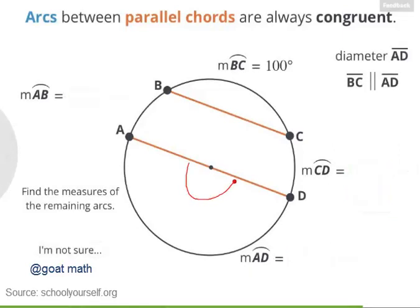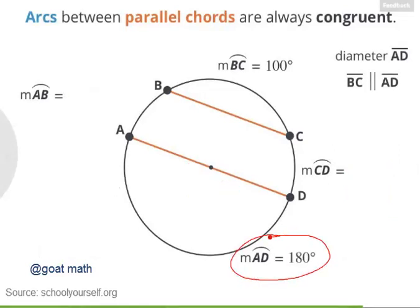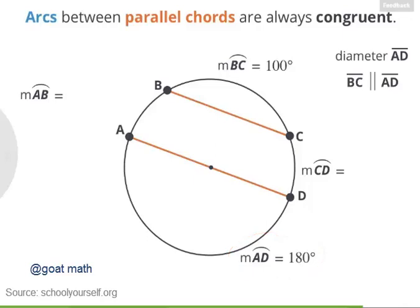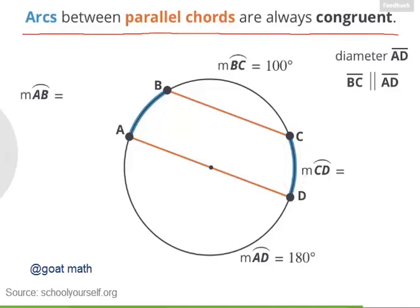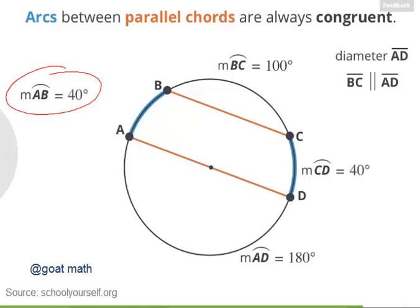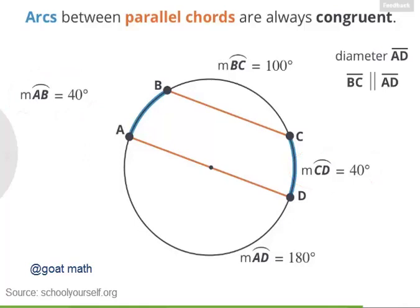Arc AD is half the circle, so it measures 180 degrees. So if arc BC measures 100 degrees, and arc AD measures 180 degrees, and all the arcs together add up to 360 degrees, that leaves 80 degrees for arcs AB and CD. According to this rule, those 80 degrees should be split evenly between these two arcs because they're congruent. So the measure of arc AB is 40 degrees, and the measure of arc CD is also 40 degrees.